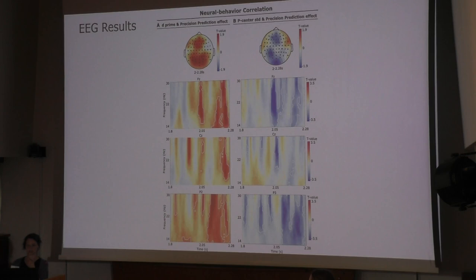Maybe I did not explain this well enough. We correlate the difference between the high precision and the low precision condition. This is the beta power effect for each participant correlated with the behavioral performance of the participant. It shows that the more it's modulated, the better they perform in the delay detection.